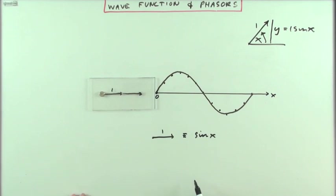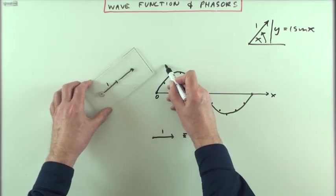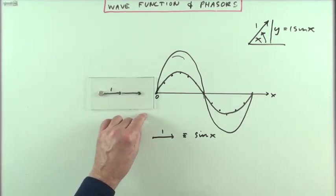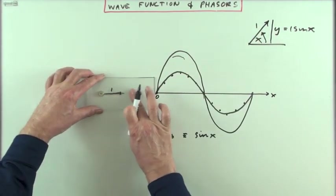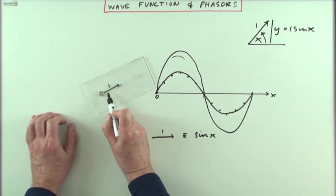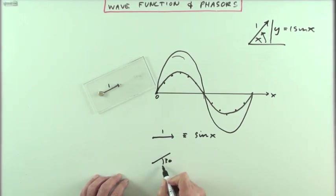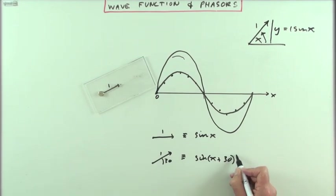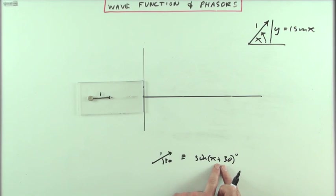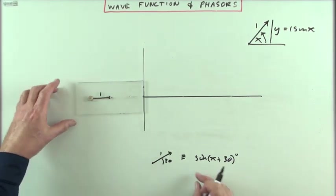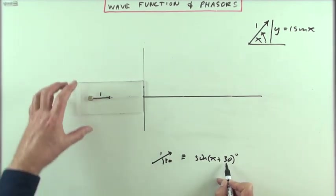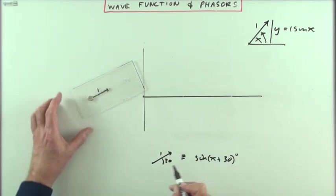If the vector had a length of 2, it would do exactly the same thing, only this time the height would be twice as much — you'd end up with the same graph, only with twice the amplitude. And if you start with a phase so that instead of starting at 0 you started at 30 degrees, that would represent the graph of sine(x + 30). And quite sensibly it's gone 30 ahead. In terms of phasors it makes perfect sense: if I want to construct sine(x + 30), I have a phasor of length 1 starting 30 degrees up.